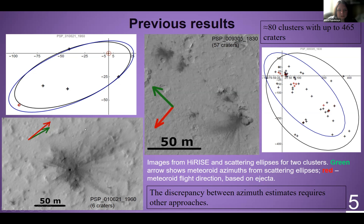The direction of flight was chosen toward the side from the center of the ellipse where the total mass of the fragments is larger. Our estimates are in good agreement with independent estimates by Daubar and co-authors in 2019. Crater ejecta and dark gray features on HiRISE images can also determine the direction of flight. However, in about half of cases, the direction of meteoroid flight did not correlate, so the discrepancy between azimuth estimates requires other approaches.